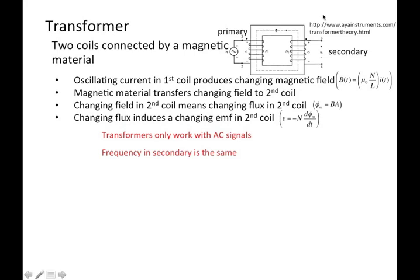What's the basic physics? Essentially, you have an oscillating magnetic field — the oscillating current that you put in the primary produces an oscillating magnetic field. Because these two coils are attached by this magnetic material, the flux of the first coil on the left — the primary — goes through the secondary coil on the right, and so that changing magnetic flux on the right produces an EMF.